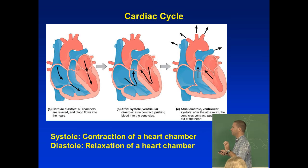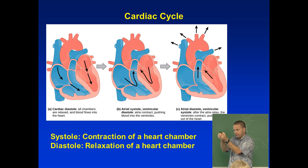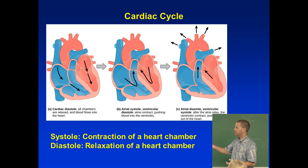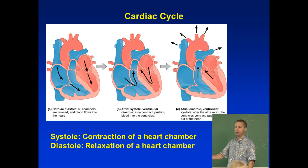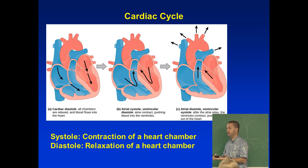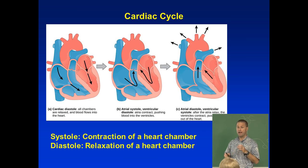Systole is the contraction of a heart chamber; diastole is relaxation. The atria and ventricles don't contract at the same time — atria contract first, then ventricles. When the ventricles relax, their volume increases and pressure falls, creating a suction effect. Much of the blood that enters the ventricles does so because of this ventricular suction — not primarily from atrial pumping. The ventricles fill to about 70% through this passive suction before the atria contract.